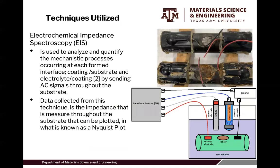The technique utilized in this research is electrochemical impedance spectroscopy, which is EIS. It is used to analyze and quantify the mechanistic processes occurring at each film interface — our coating substrate and electrode coating — by sending AC signals through the substrate. Here's a representation of how our setup looks: we have our impedance analyzer connected to our working electrode, which is submerged in the NS4 solution. This is our simulated soil environment, which has a holiday in it.